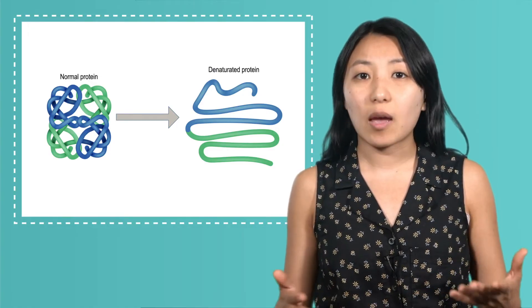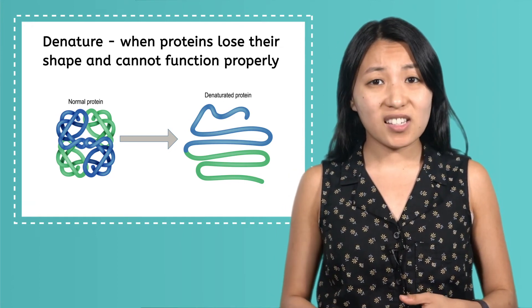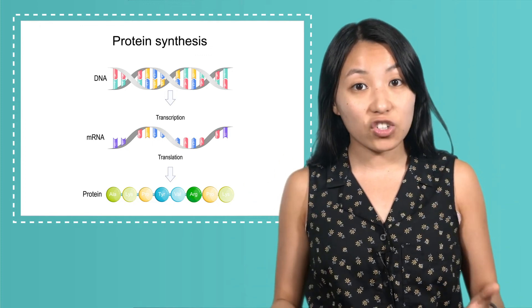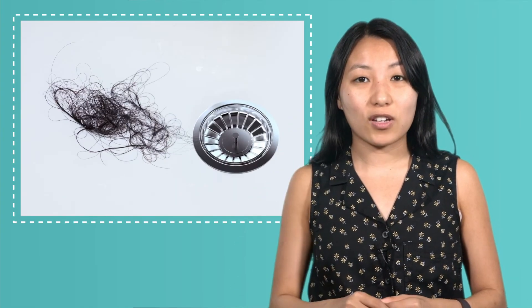Exposure to heat and certain chemicals causes proteins to denature, or lose their shape. When this happens, proteins can no longer function properly, so our cells have to replace them by making more. You can observe protein synthesis affecting your life when your hair or nails grow, when you use your muscles, or even when you feel hungry, because many of the chemical messengers in your body are also made of proteins. Without protein synthesis, our cells wouldn't be able to build what they need to function and keep us healthy.